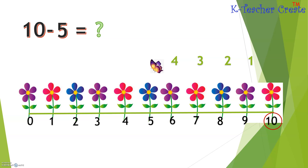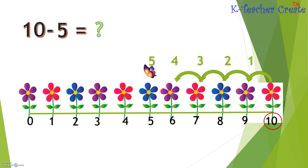Four, five. Let's count backwards one more time from number ten, we count five times backward: one, two, three, four, five. Now the answer is five.